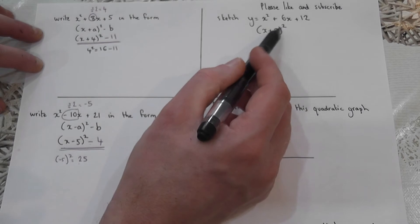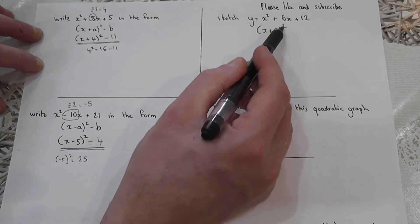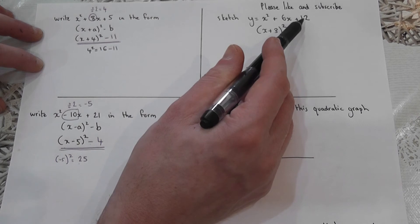And I want a 12. So in this example, rather than take away a number, three squared is nine. To get from nine to 12, I've got to add three.